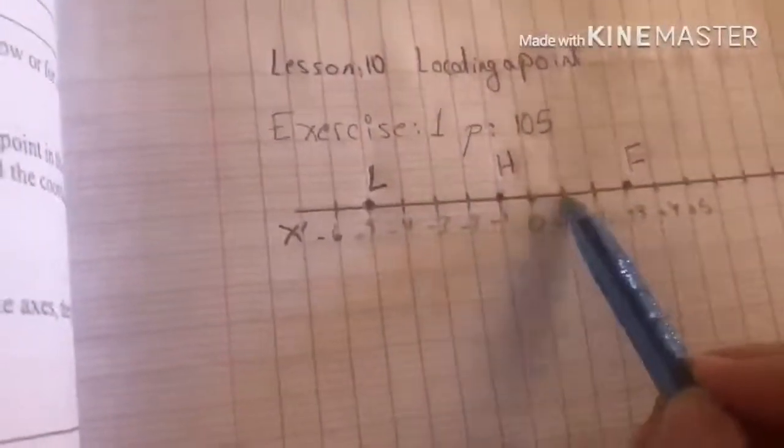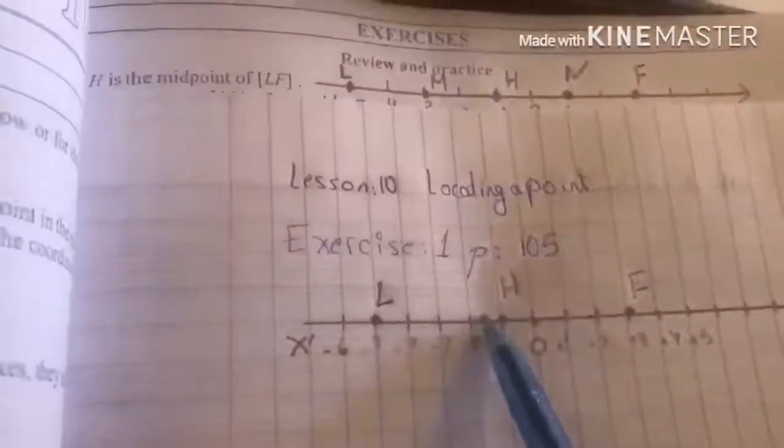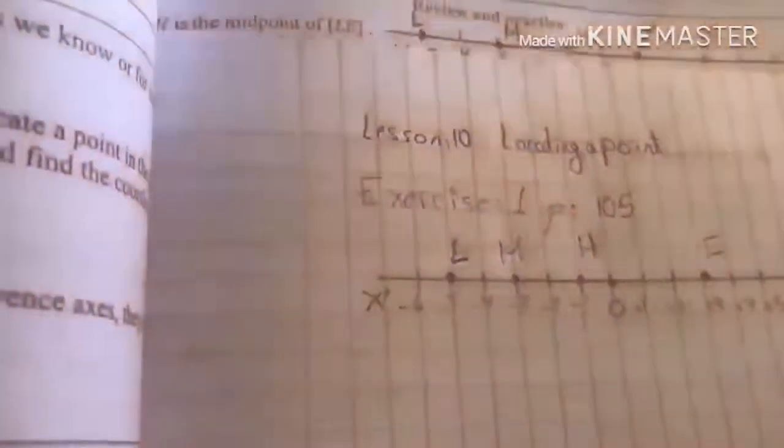What does H represent for L and F? Where do we want to put H? 1, 2, 3, 4. If we want to put H, 1, 2, 3, 4. So H is what? H is the midpoint of LF. Part B, locate on OL. On OL, I have to put point M, such that LM is equal to 2. So L, 1, 2. So where is M? Here it is M. What is the abscissa of M? What do you see? The abscissa of M is minus 3. Pay attention. We have to write it like this. This is the notation of the abscissa.